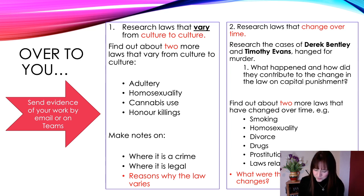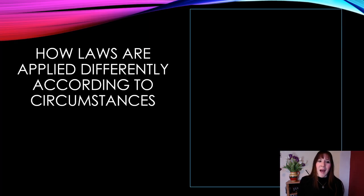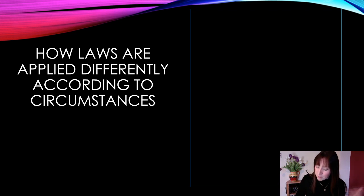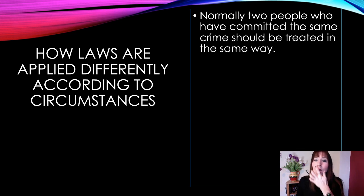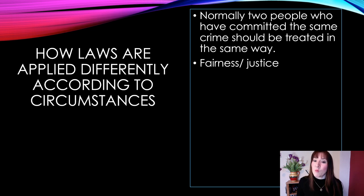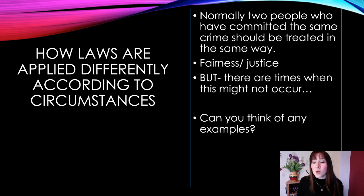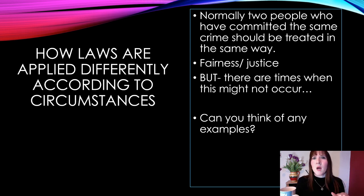However, we are going to continue. How laws are applied differently according to circumstances — how the circumstances of the crime affect how the law can be applied. Normally, two people who commit the same crime should be treated in the same way, for fairness and justice. But there are times when this might not occur. Can you think of any examples where two people commit the same crime but one might get a worse or lesser punishment?